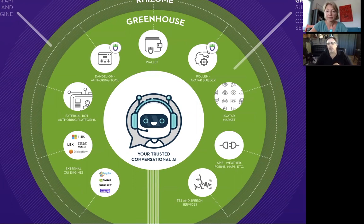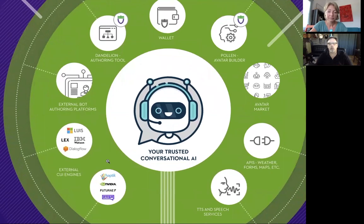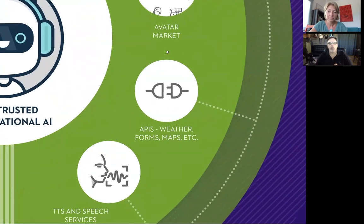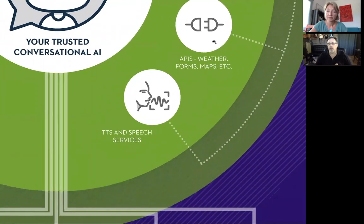Third parties can build any functionality they like on top of the SEED platform — from the types of engines used for dialogue and conversational flow, to the way they display avatars, or getting information like stock market quotes. We will not put any reasonable bounds on what can be done. We're purely here to provide a mechanism for people to build great conversational agents.